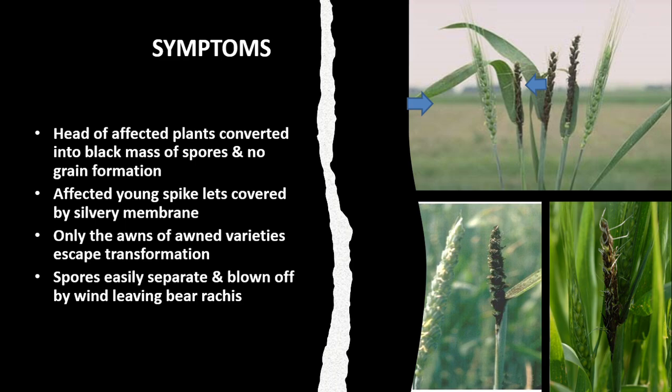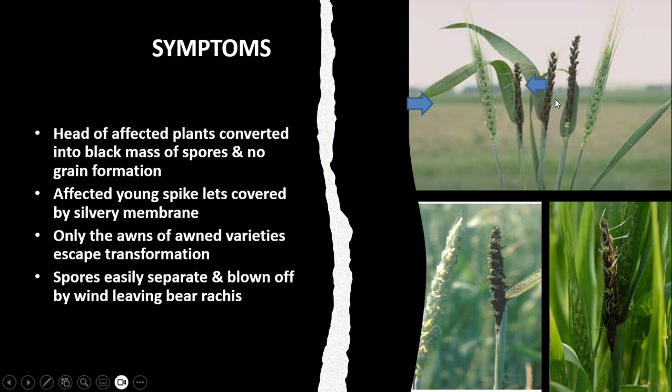The symptoms include the head of affected plants being converted into a black mass of spores, with no grain formation taking place. Similarly, infected young spikelets are initially covered by a silvery membrane. Only the awns of awn-bearing varieties escape transformation into a mass of spores. The spores are easily separated and blown away by wind, leaving a bare rachis.